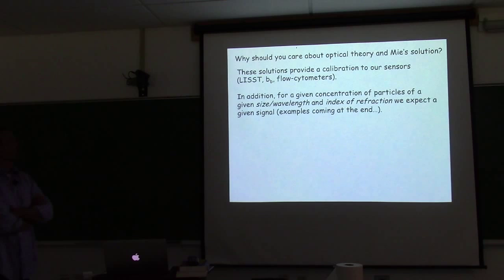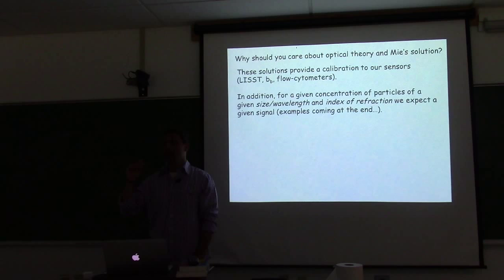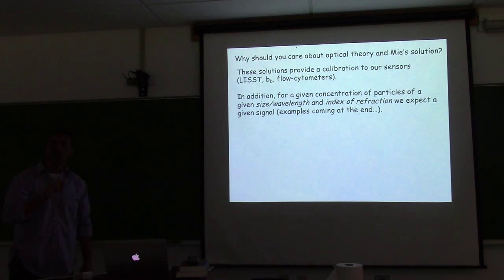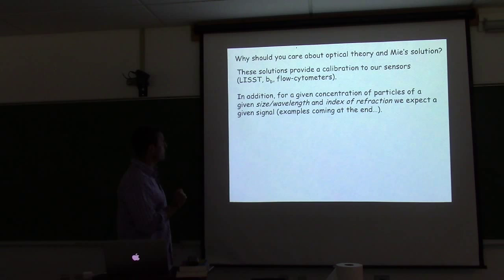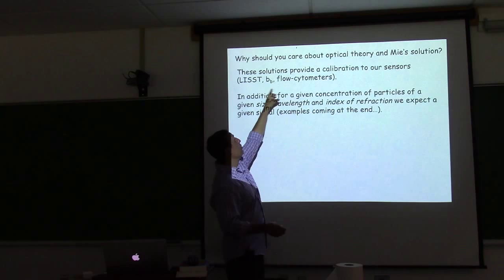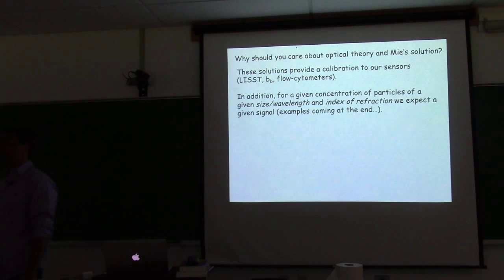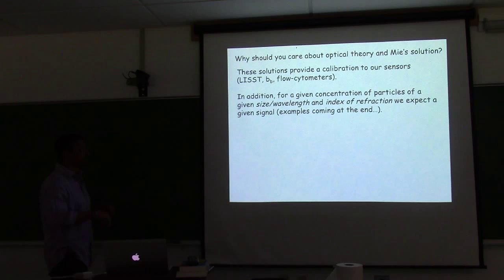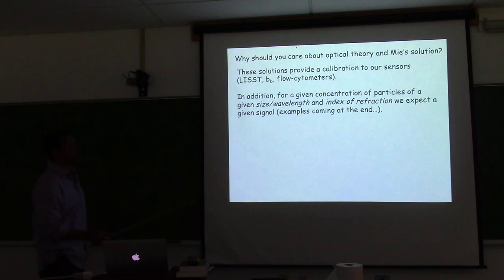Why should we care about optical theory and Mie solution? When we calibrate the instrument with beads, we go to Mie theory to tell us what we should expect for a given concentration of beads of a given size and composition — what is the scattering we should expect from the suspension. Then we can put them inside our instrument, whether it's a test chamber, a bucket, or a flow cytometer, run the beads through, and use those to calibrate our instrument. For this, people use expensive NIST-traceable beads so they know exactly the size distribution; they're spherical.